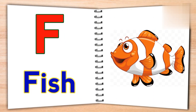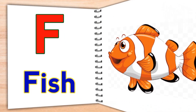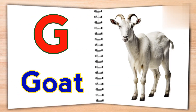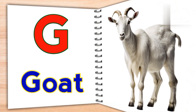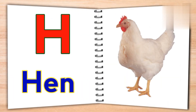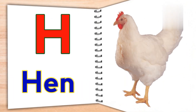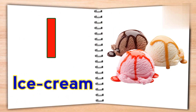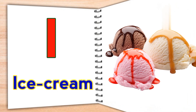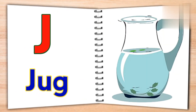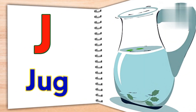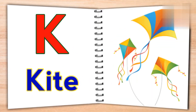F for fish, G for goat, H for hen, I for ice cream, J for jug.